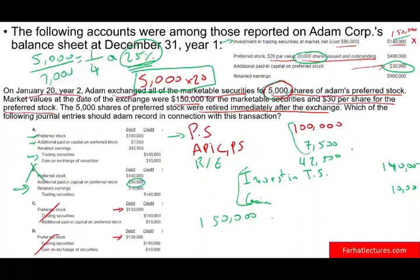To recap: retiring 5,000 shares of preferred stock at 5,000 times $20 means you debit preferred stock $100,000 — the same way you credited it when issuing. That eliminates C and D. Then retire the related additional paid-in capital. Since answer B shows $30,500 and you only have $30,000 total, you eliminate B. A is the answer.